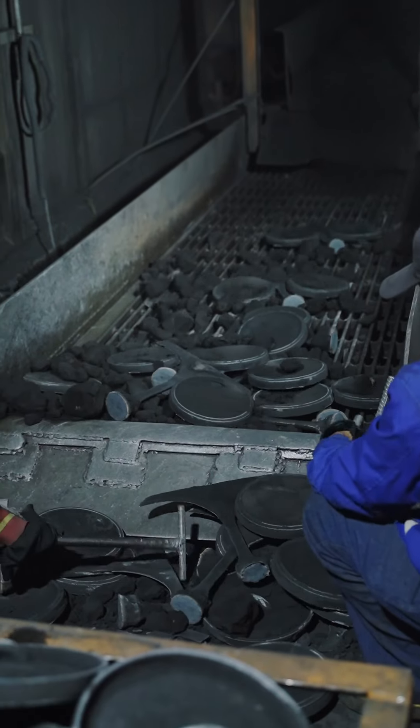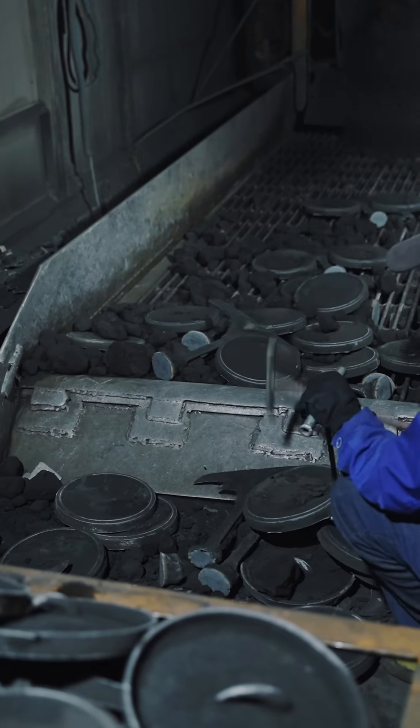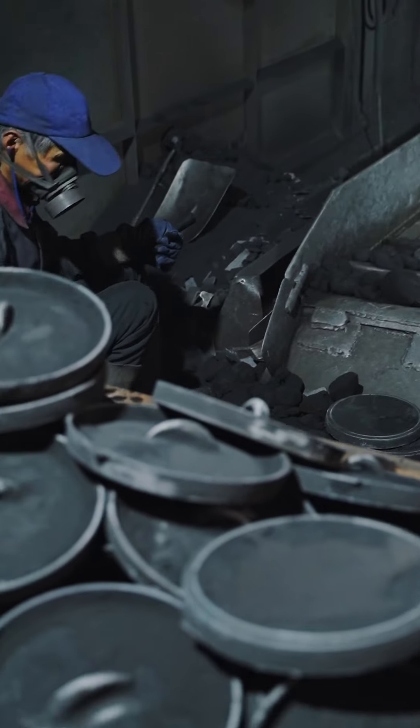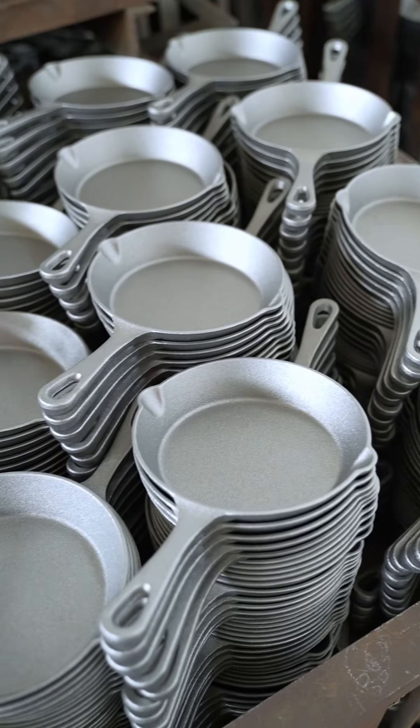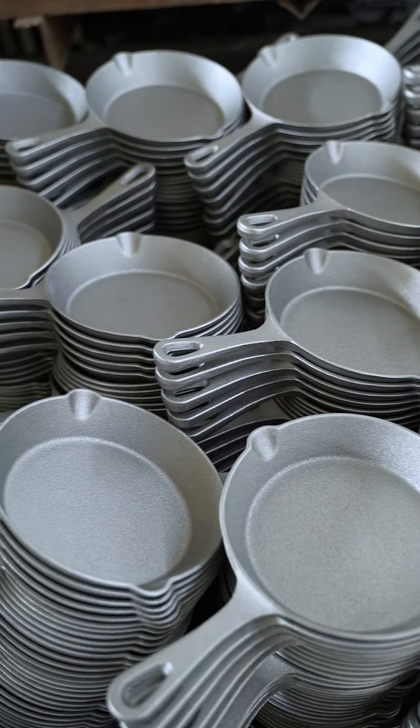The carbon content in cast iron increases hardness, but it also makes the material more brittle. That's why cast iron cookware has thick and heavy walls. The thickness of cast iron cookware makes up for its brittleness.